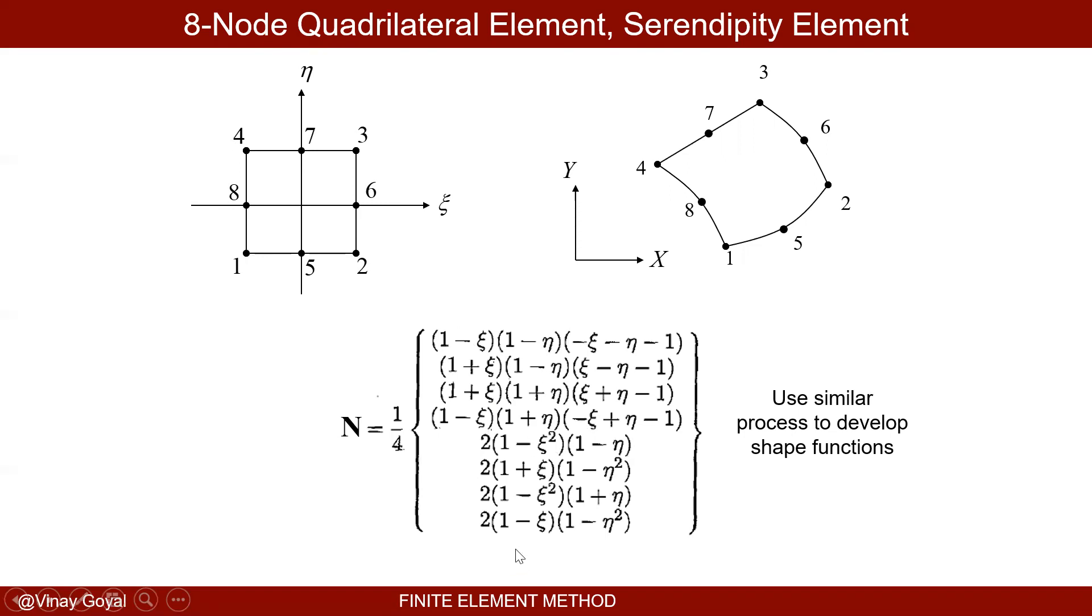Very powerful idea. So N bold are my trial functions, my basis functions in the weak form Galerkin.